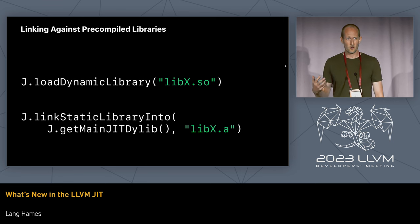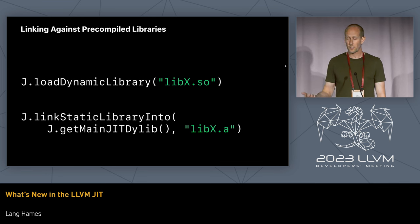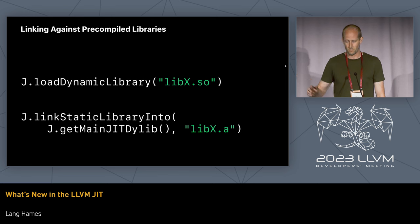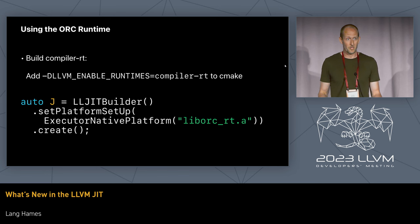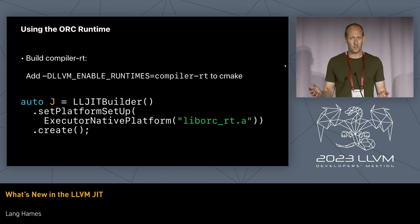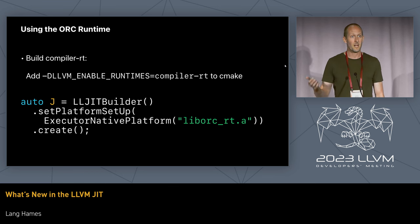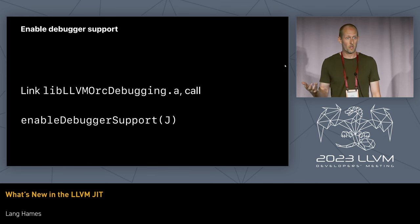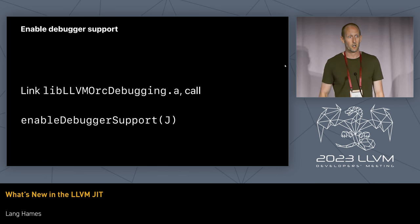There was similar boilerplate required anytime you used a static or dynamic library from JITted code — we've got convenience functions to make that easier now. To make a dynamic library available, you can just call JIT.loadDynamicLibrary with the path on disk. Similarly, for a static archive you can call JIT.linkStaticArchiveInto. If you want advanced features from the ORC runtime like native thread local storage, you'll need to build the ORC runtime — just add -DLLVM_ENABLE_RUNTIMES=compiler-rt to your CMake invocation. Then when configuring your JIT, call set_platform_setup(execute_native_platform) with the path to the ORC runtime. If your JITted code has debug info and you want to debug it, just link the ORC debugging library and call enable_debugger_support on your JIT class.